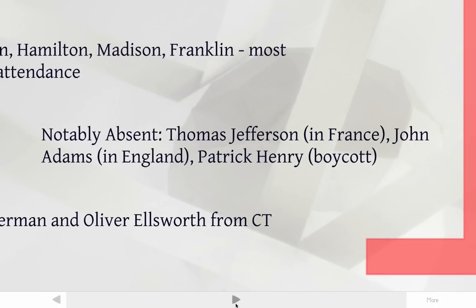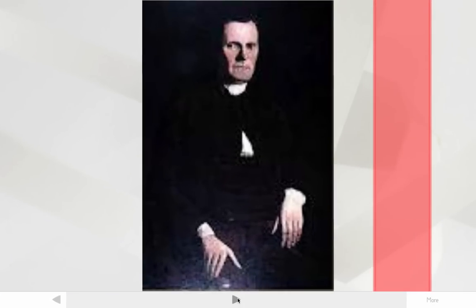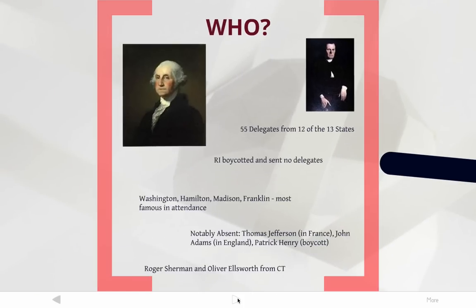Some people you might have expected to be there who weren't: Thomas Jefferson, the man who wrote the Declaration of Independence and would become our third president, was not there — he was in France working as the minister to France. John Adams, who would become the second president, was in England working as the minister to England. They were both overseas and probably would have been there had they been in the country. Patrick Henry, famous from the Revolutionary War, was also not there — he was boycotting it like Rhode Island and did not like the idea of changing the government. Connecticut sent Roger Sherman and Oliver Ellsworth as its two delegates. Roger Sherman is going to become extremely important at the Constitutional Convention — probably the most important person there, even though you've likely never heard of him. He does a lot of good work and actually saves the convention from disaster.